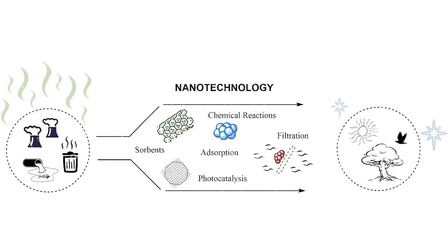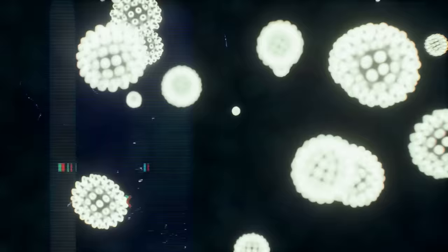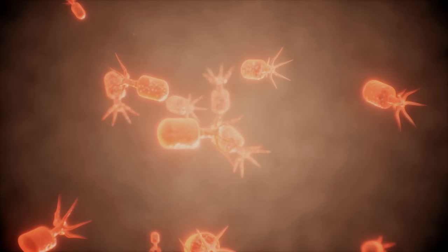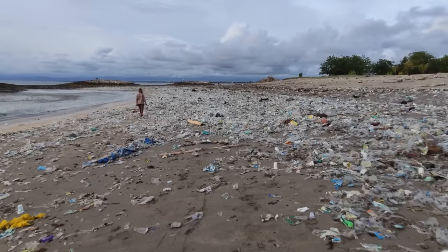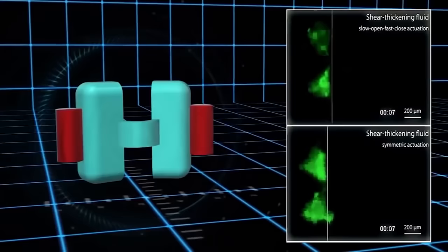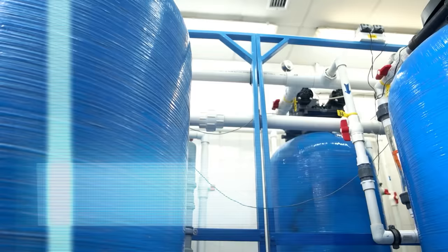Number 5: Environmental Cleanup. The application of nanorobots in environmental cleanup presents a promising solution to the pressing challenges of pollution and contamination. These tiny machines have the potential to contribute significantly to the removal of pollutants from water, soil, and air, ultimately aiding in environmental conservation and remediation efforts. In water cleanup, nanorobots can be utilized to target and neutralize various contaminants, including heavy metals, organic pollutants, and harmful microorganisms.